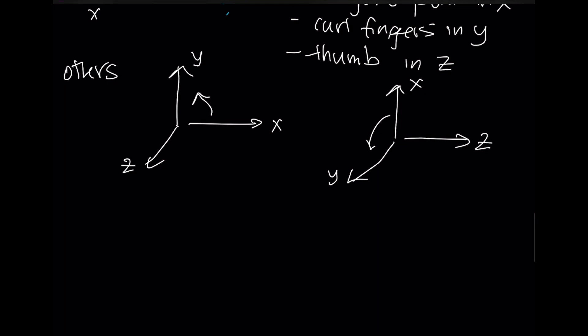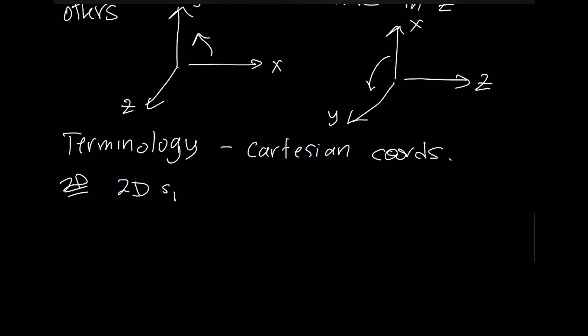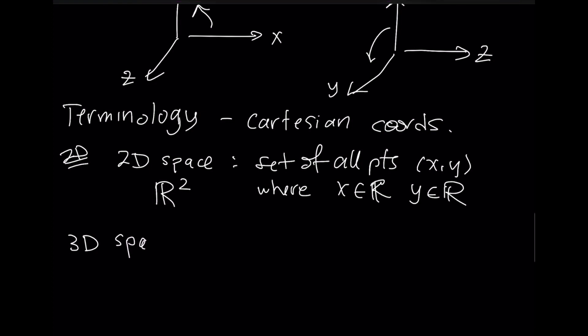I'm just going to talk about some terminology that's related to Cartesian coordinate systems. Two-dimensional space is going to be the set of all points x and y like this, where x is a real number and y is a real number. We're going to call this space R2, and we're going to say that 3D space, we're going to give the name R3, and it's going to be the set of all points x, y, z, where x is a real number, y is a real number, and z is a real number.